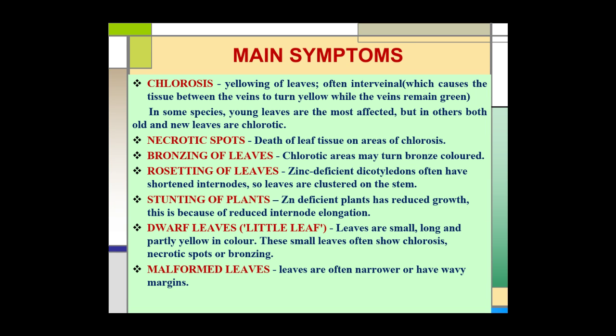The main deficiency symptoms in zinc-deficient plants are: first, chlorosis — the yellowing of leaves. Often, interveinal chlorosis occurs, meaning the tissue between the veins turns yellow while the veins remain green. In some species, young leaves are the most affected, but in other plant species both old and new leaves become chlorotic.